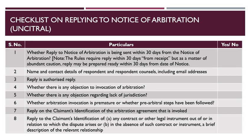Sixthly, whether the invocation is premature or whether pre-arbitral steps, completion of cooling-off periods, etc., have been followed. The seventh item in the checklist is whether there is any response on the claimant's identification of the arbitration agreement that is sought to be invoked. The eighth item is whether there is any reply on the claimant's identification of: a) any contract or other legal instrument out of or in relation to which the dispute arises, or b) in the absence of such contract or instrument, the brief description of the relevant relationship.